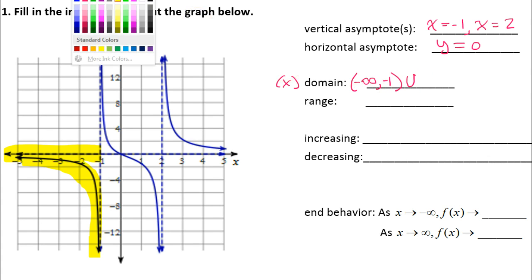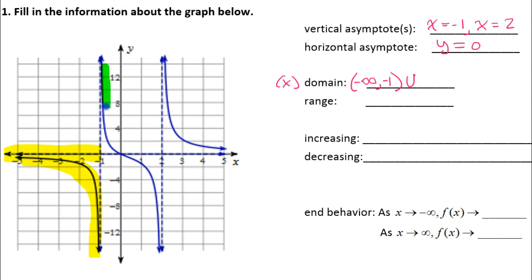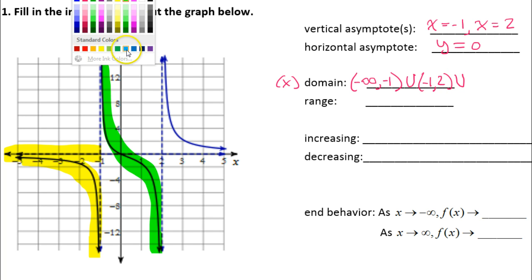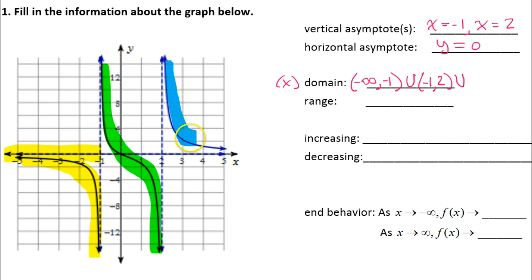Now looking at the middle portion of the graph on the x-axis, it goes from negative one to two. So the next part of the domain is from negative one to positive two. Then looking at the last portion of the graph, on the x-axis it goes from two to infinity. So we put two to infinity — that's the full domain.